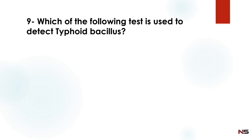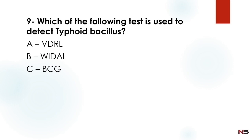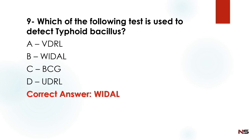Next question: Which of the following tests is used to detect typhoid bacillus? Option A: VDRL. Option B: Widal. Option C: BCG. Option D: UDRL. The correct answer is Option B — Widal. The Widal test is used to detect typhoid bacillus.